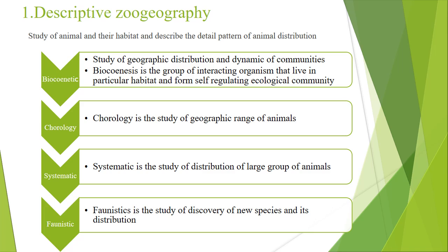The second branch is chorology. Chorology is the study of the geographic distribution of animals, or the study of geographic range — meaning we study the maximum range of animal movement. For example, if a species is present in a particular era or period, in chorology we find out the boundary line or the limit of that particular species.